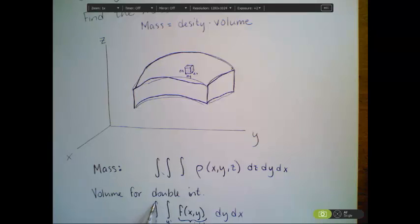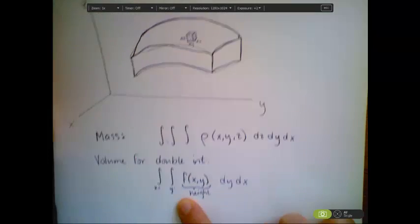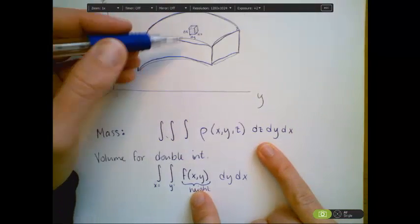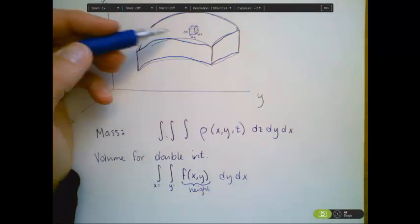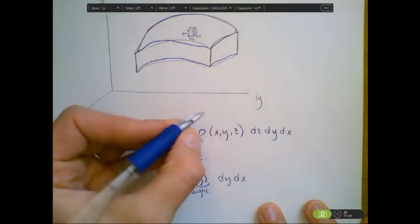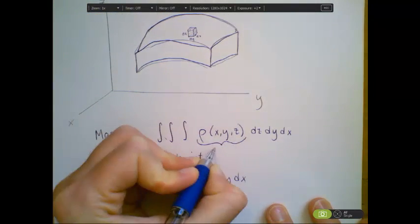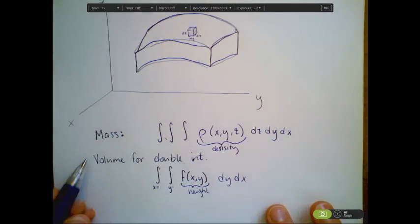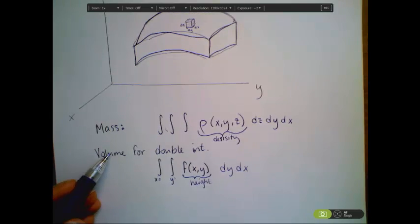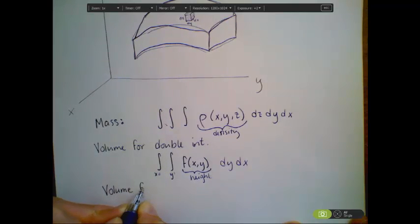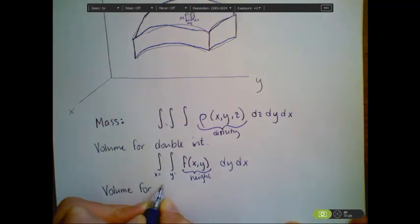dy dx. So here is our base. Our bounds gave the base and the function gives the height. In this case, our z values are being used to trace out the region, and our function is telling us the density instead. So this function is telling us the density. But we can use triple integrals to be able to compute volume. So what would that look like? A volume using triple integrals.